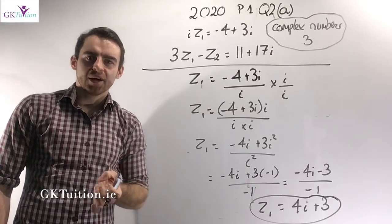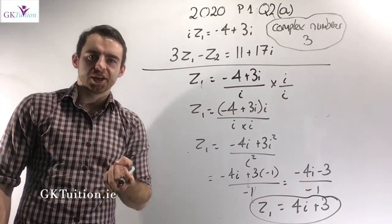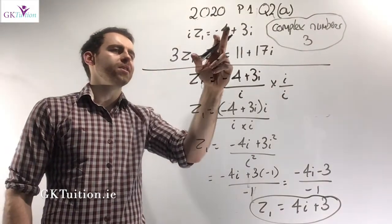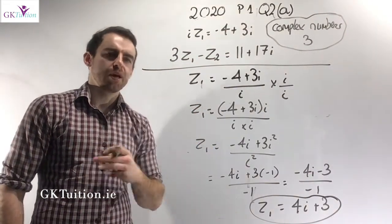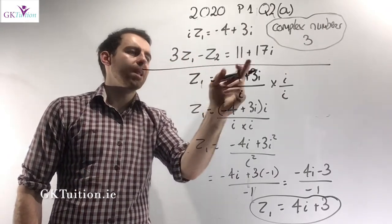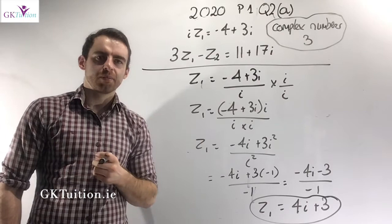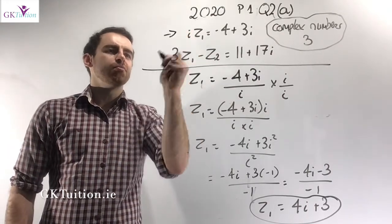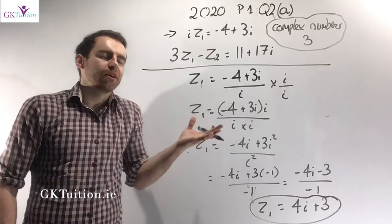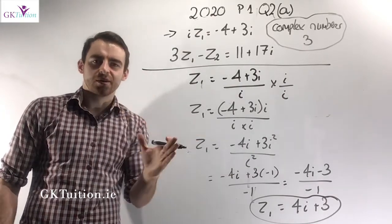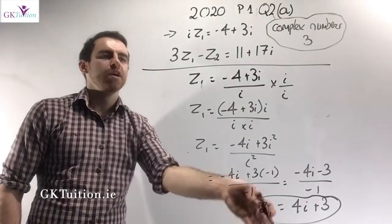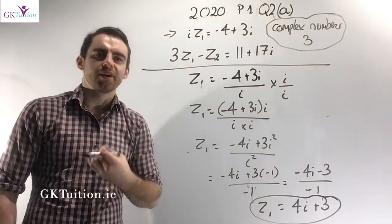In question 2 part A, we're given a simultaneous equation involving complex numbers. We're told that i times z1 is equal to minus 4 plus 3i, and that 3 times z1 minus z2 is equal to 11 plus 17i. You should look at the first equation and realize that there's only one unknown there. I can just simplify the first equation and get z1 on its own, and then once I have z1, I sub it into the other equation to find z2.